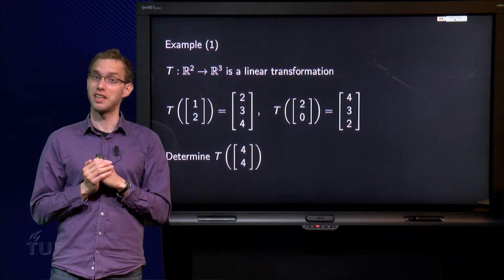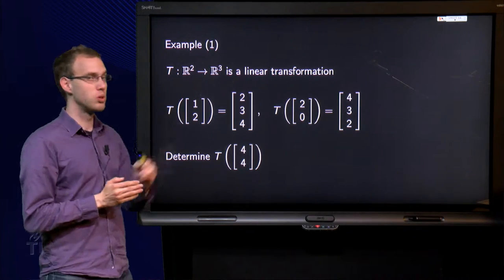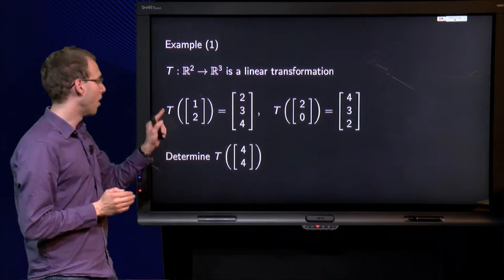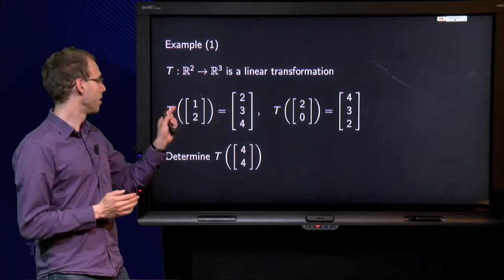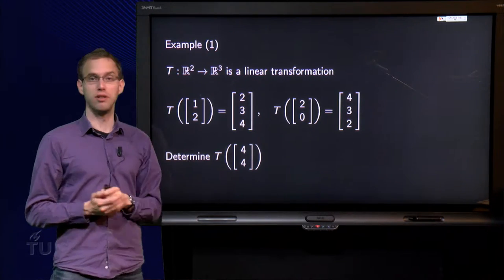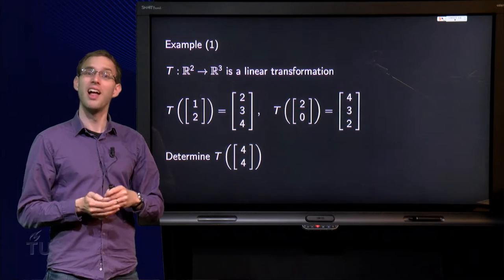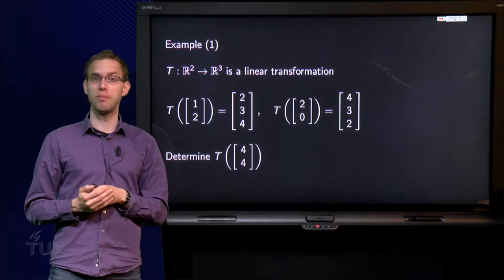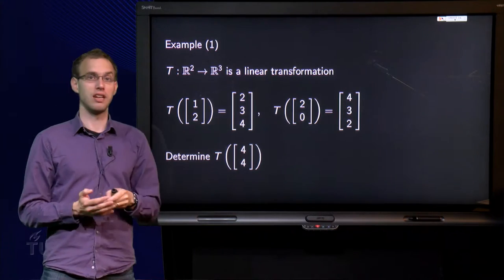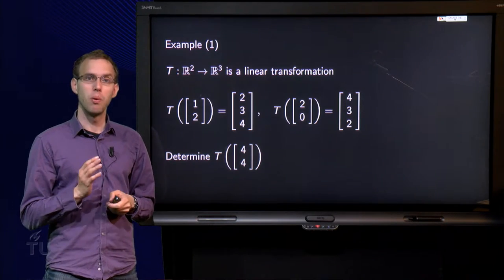Here we have a linear transformation from R² to R³. And only two points and its function values are given. The function value at (1,2) and the function value at (2,0). The question is, can I find with only this information the function value at say (4,4)? Well, let's see.